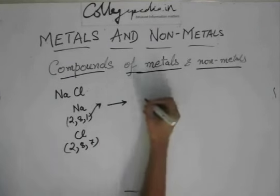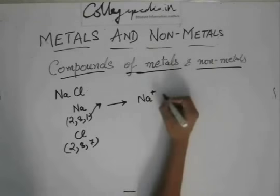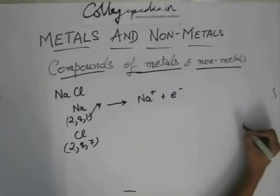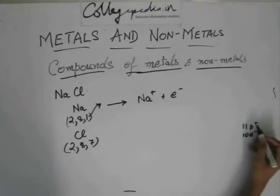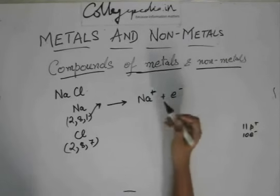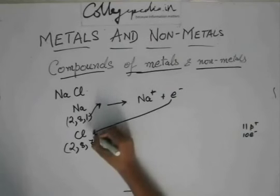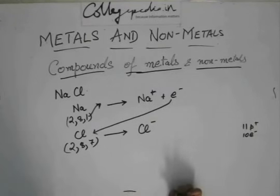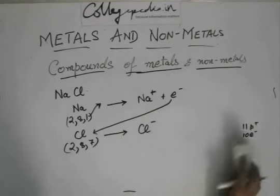So, first what happens is that sodium will become sodium plus and give out 1 electron. Because it gives out an electron, it has still 11 number of protons, but earlier it had 11 electrons, but now it has 10 electrons. So, there is 1 extra proton, so there is a positive charge on sodium and you have an electron being given out. Now, this electron has become free. And what this chlorine does is that it accepts this electron and it becomes Cl minus.